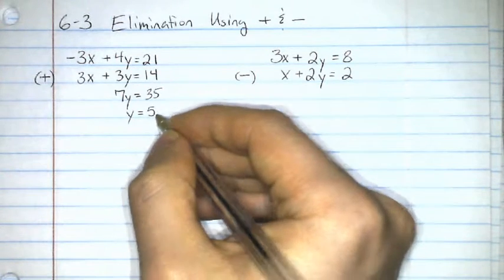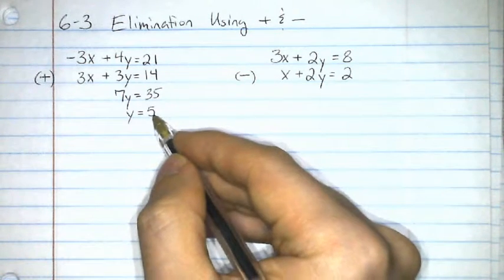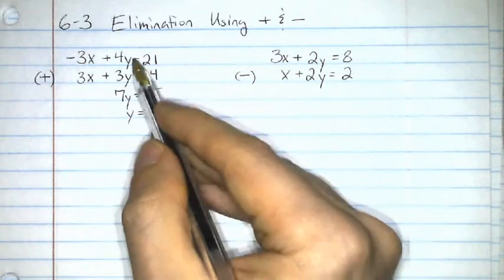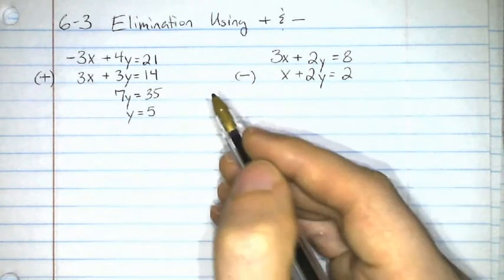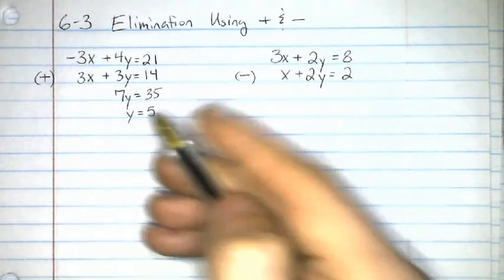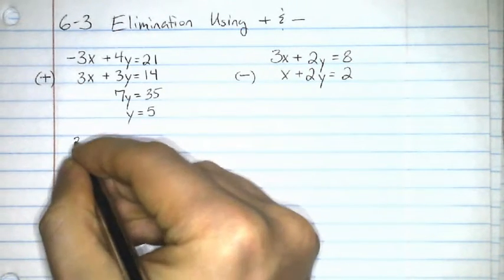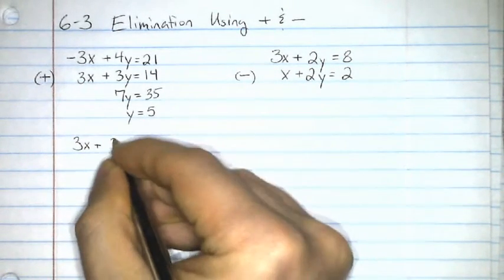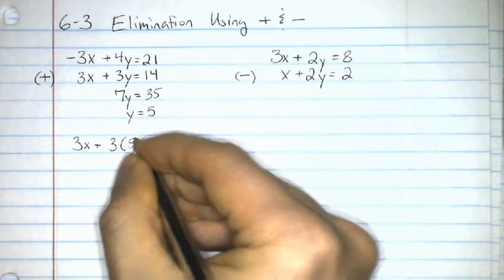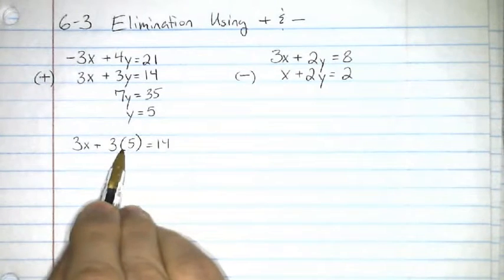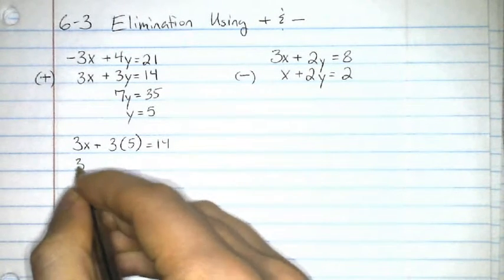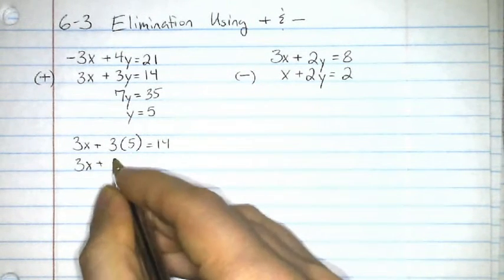Now that I know what y is, just like in the last section, I'm going to substitute this value in for y, and I can do it in either equation. It truly doesn't matter. I'll choose this one since there's no negatives. Now, we've got 3x plus 3y, and we know that y is equal to 5, equals 14. Notice I put the y in parentheses there. 3 times 5 is 15.